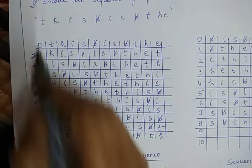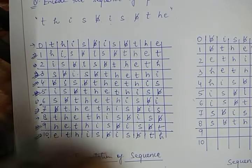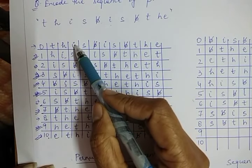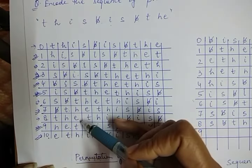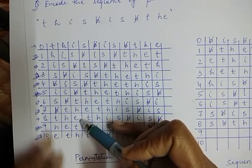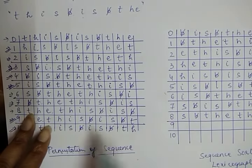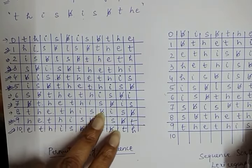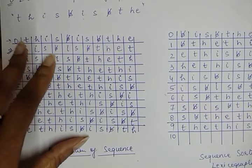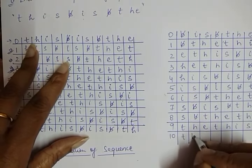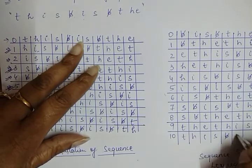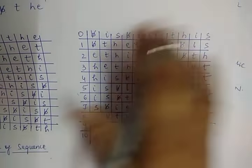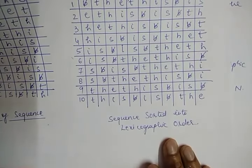Finally, 't' comes at positions zero and eight. Checking second symbol: both have 'h', same priority. Third symbol: position zero has 'i', position eight has 'e' — 'e' comes first. So position eight goes to place nine: 't h e t h i s b space i s b space'. Position zero goes to place ten. This is how we create the second table in lexicographic order.